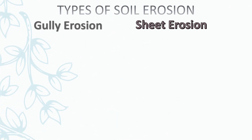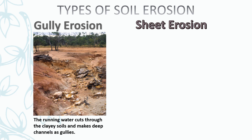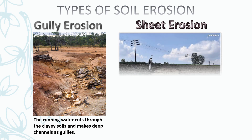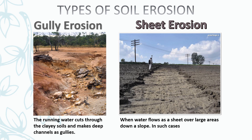Generally there are two types of soil erosion. First is gully erosion, where running water cuts through the clayey soil and makes deep channels called gullies. The second is sheet erosion, where water flows as a sheet over large areas down a slope and the top soil is washed away.